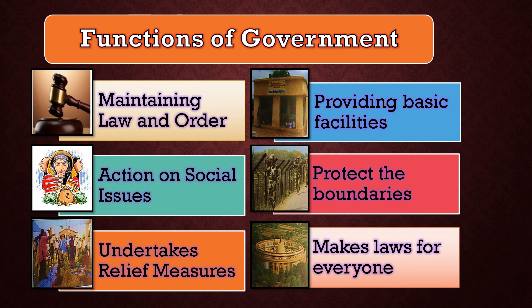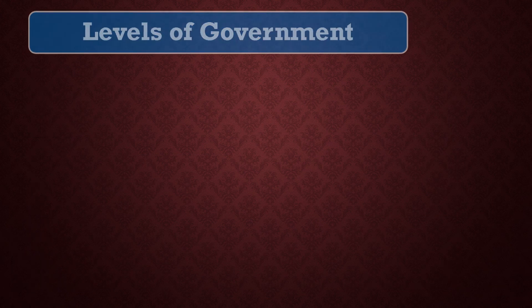The next function is undertaking relief measures. During natural disasters like earthquakes, tsunamis, floods, and droughts, the government organizes assistance for the affected people. The last function is making laws for everyone — it is a very important work of the government to make rules in the form of laws to protect the rights and interests of each of its citizens. Otherwise the interests of different groups and communities may clash, so the government takes collective decisions on behalf of its people by exercising leadership. In this way, indirectly through the people, laws are made, and these laws are very helpful in running the country smoothly.